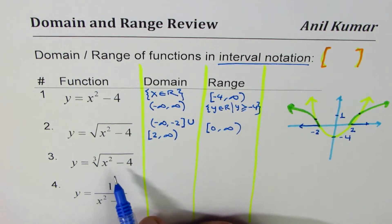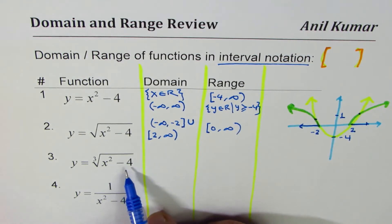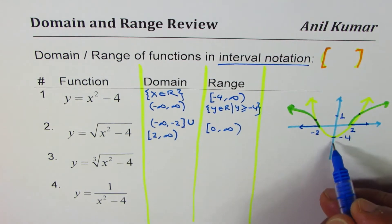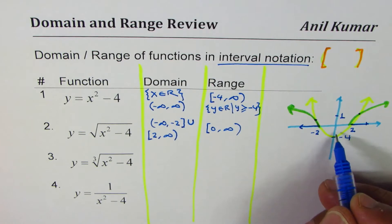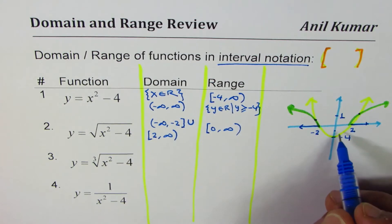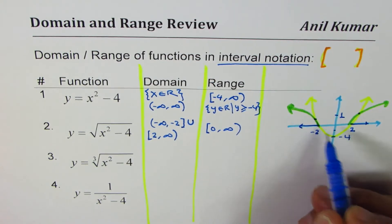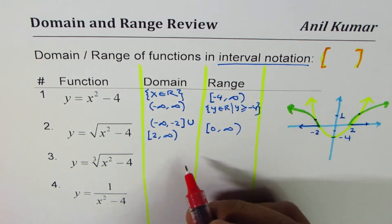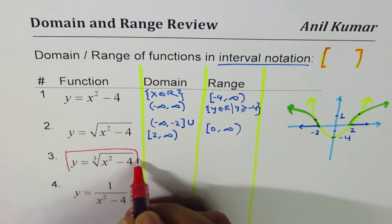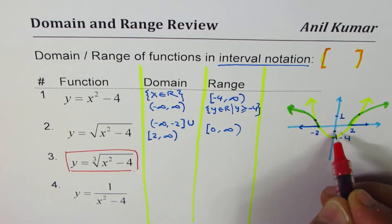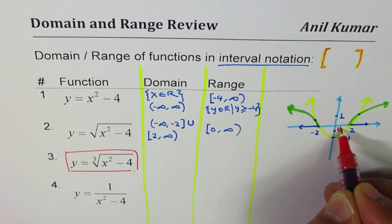Now, how about the cube root of this function — ∛(x² - 4)? You can find the cube root of negative numbers. For example, ∛(-4) is valid — it's greater than 1 but less than 2 in magnitude. ∛8 = 2. And ∛0 = 0, which gives another point on the graph. Let me sketch the cube root function now.